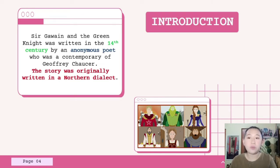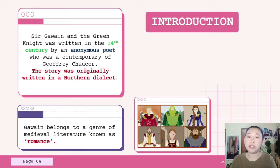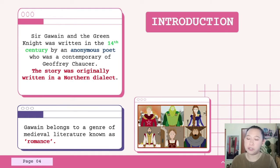Sir Gawain was written in English, but not the kind of English you'd recognize. It's written in a dialect of Middle English called Northwest Midland. Middle English was a much less standardized language than modern English is today. Gawain belongs to a genre of medieval literature known as romance. Romance texts aren't predominantly concerned with love, but often focus more on adventure.